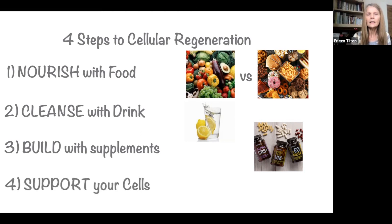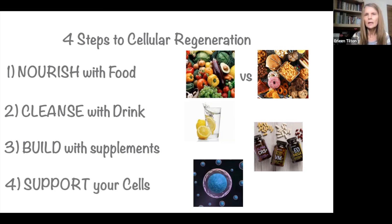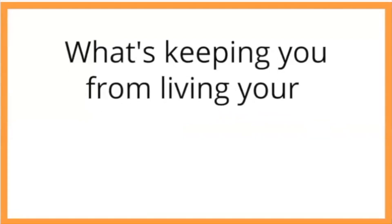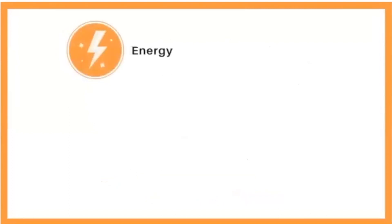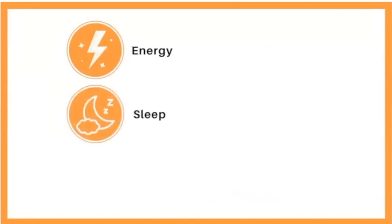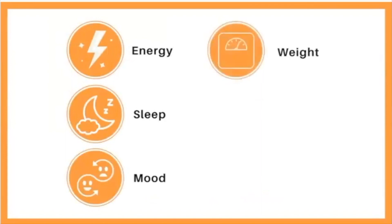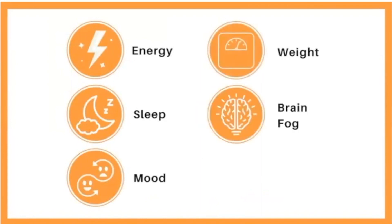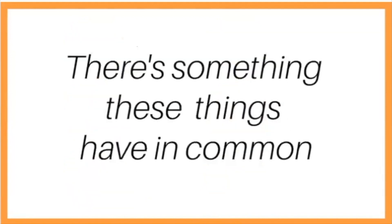Number four is to support your cells. Here is a video to share more. What's getting you from living your best life? Are you lacking the energy to do the things you want to do? Are you not getting the quality of sleep you need? Does your mood fluctuate from day to day? Are you holding on to extra pounds you wish you didn't have? Do you experience regular brain fog? Are you consumed by stress? There's something these things have in common — they're linked to aging.